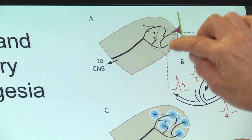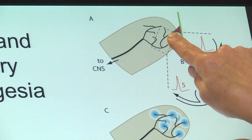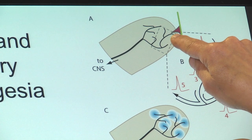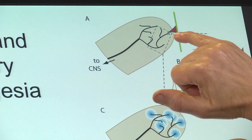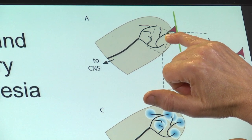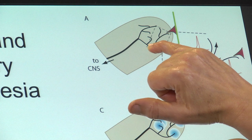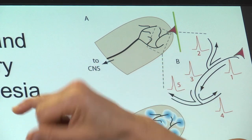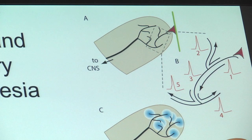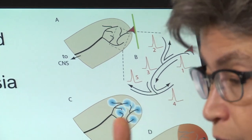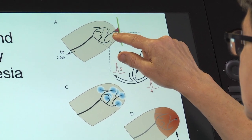This is its receptive field. Let's say that the thorn hits one of these branches. Now what we think about is that there's going to be an action potential here. It's going to go back into the central nervous system, and voilà — we're going to have pain. That does happen. But there's something else that happens.